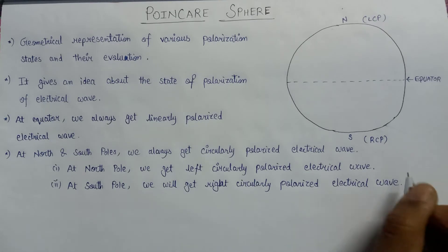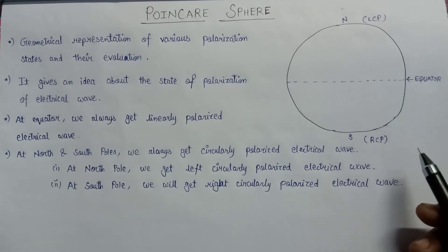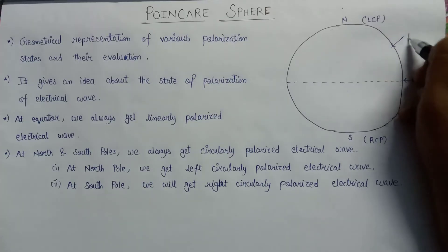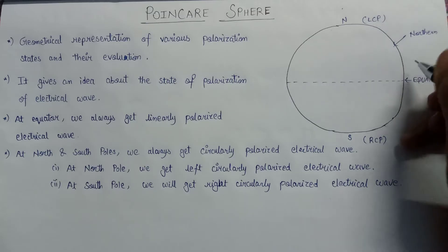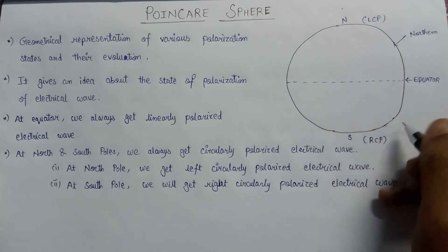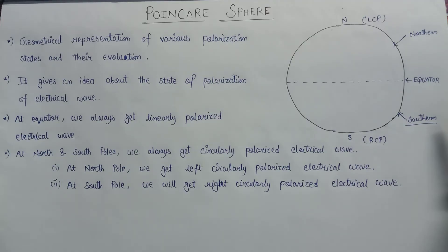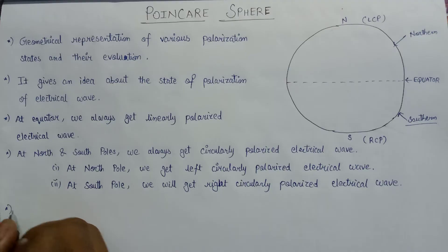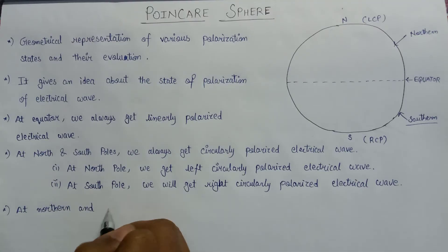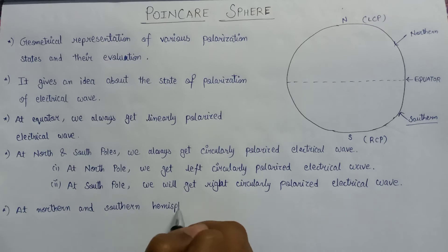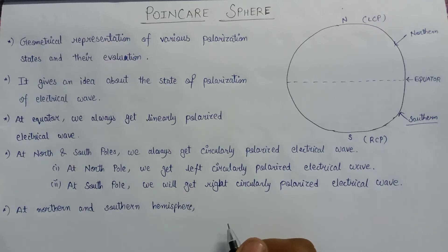This is all about circular polarization on the Poincaré Sphere. Above the equator is the northern hemisphere and below the equator we consider the southern hemisphere. In both the northern hemisphere and the southern hemisphere, elliptically polarized electrical waves exist — we always get an elliptically polarized electric wave in these regions.